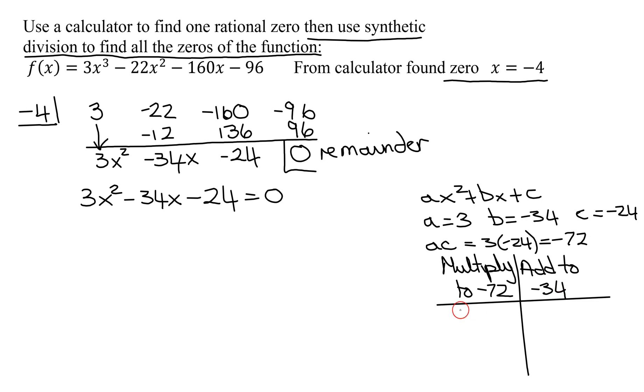I could start with 1 times negative 72. That is definitely not going to work, because those two do not give me negative 34. They give me negative 71. So 2 goes into 72 36 times. So it's 2 times negative 36. 2 plus negative 36. This is looking good. Those add up to negative 34. So these are not my factors. That's what I'm going to break my middle term down into.